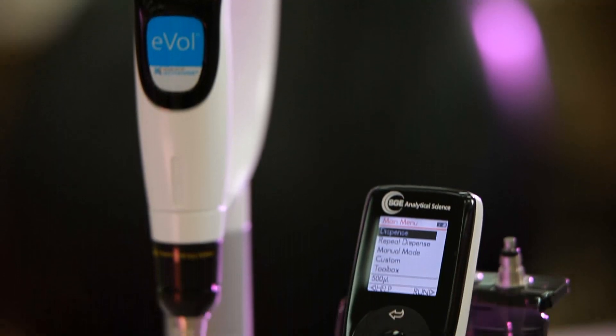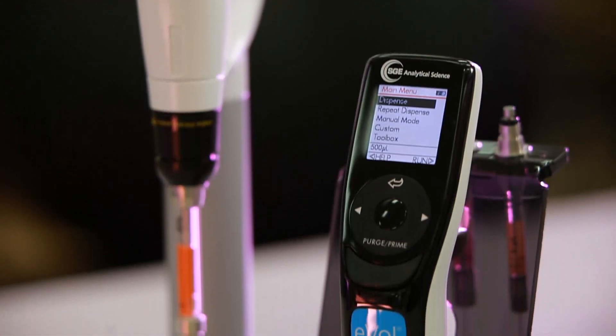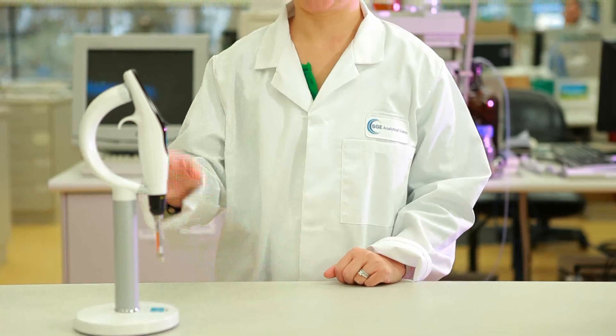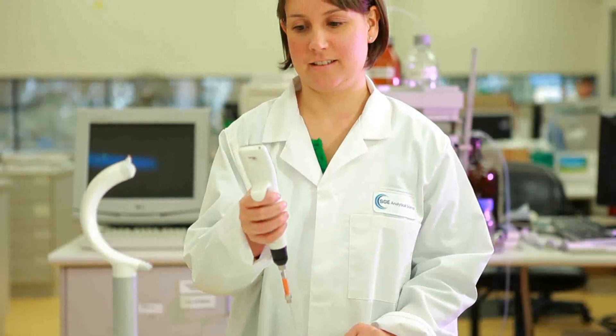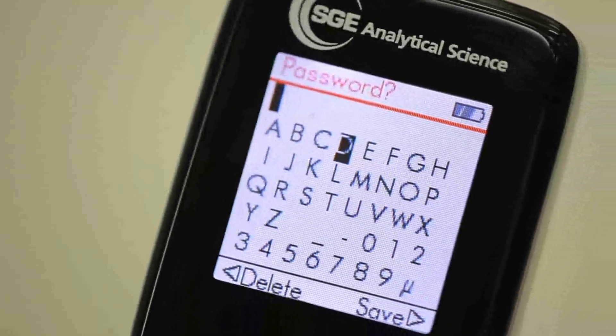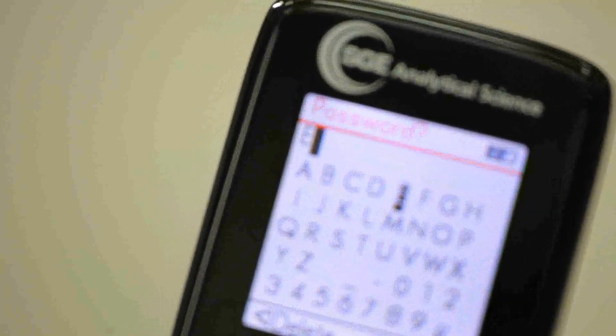With the EVOL digital analytical syringe, the settings can be write protected to provide limited access to secondary users. Once a password has been set, it must be entered in order to gain access to the Write Protect screen, preventing users from changing the write protection options once they have been set.